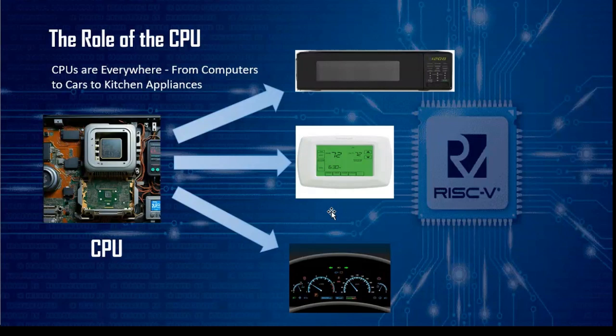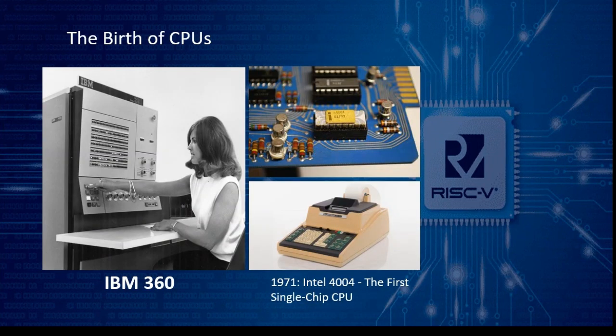At the heart of every computer lies a central processing unit, or CPU. These powerful chips execute the programs that drive everything from operating systems on your computer to simple tasks like managing your microwave functions. Even your car might have hundreds of CPUs controlling everything from the braking system to the infotainment screen.